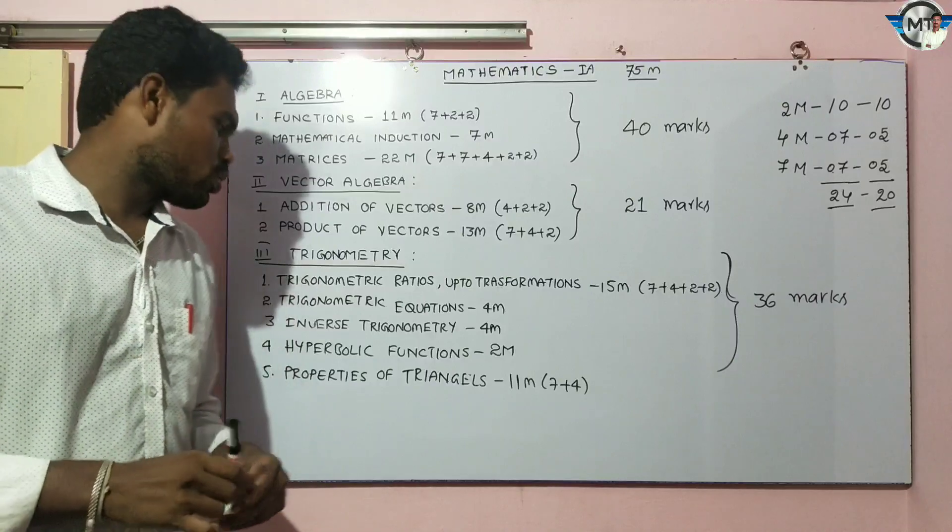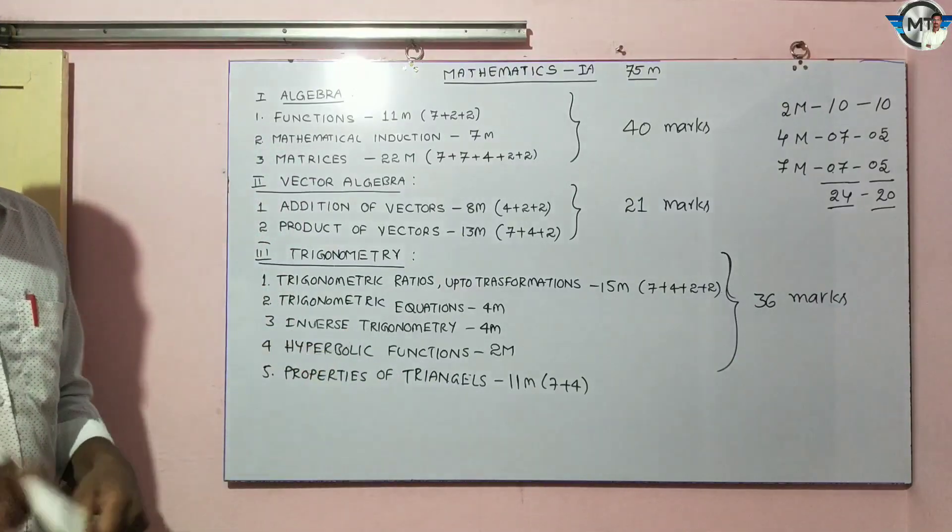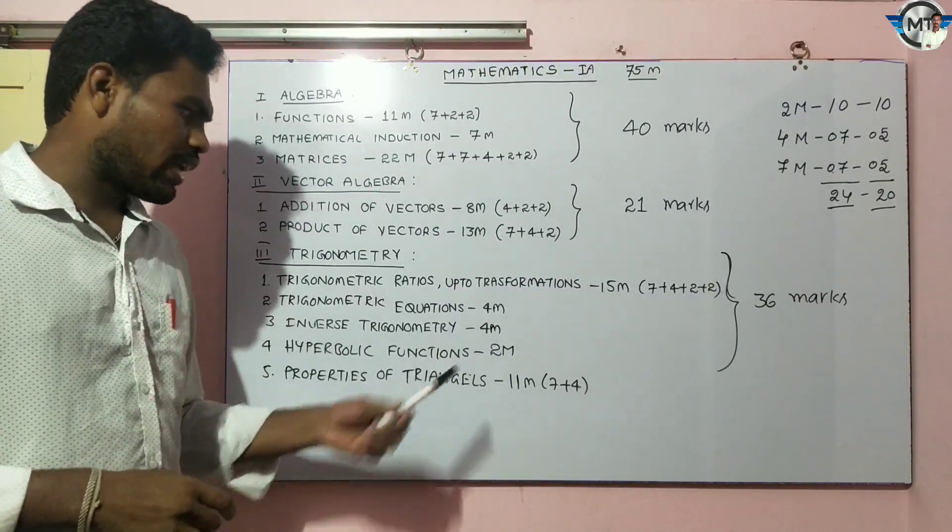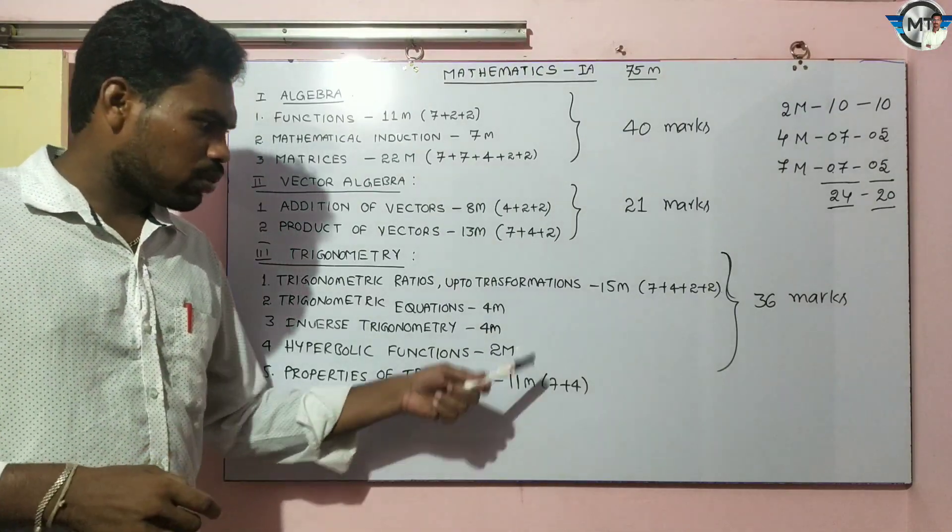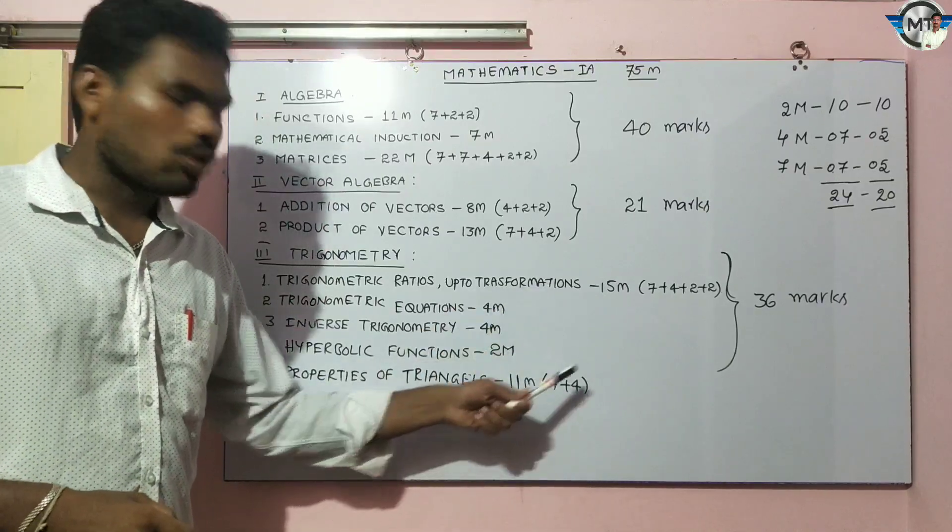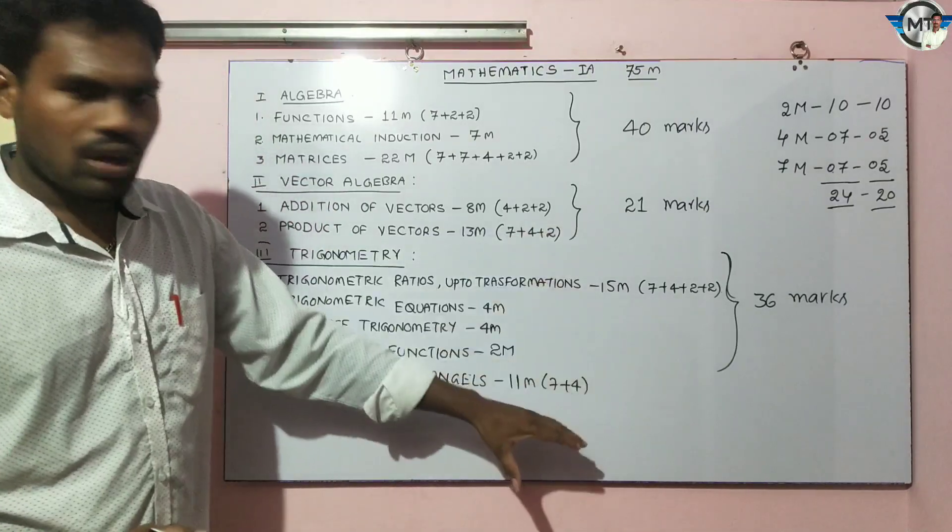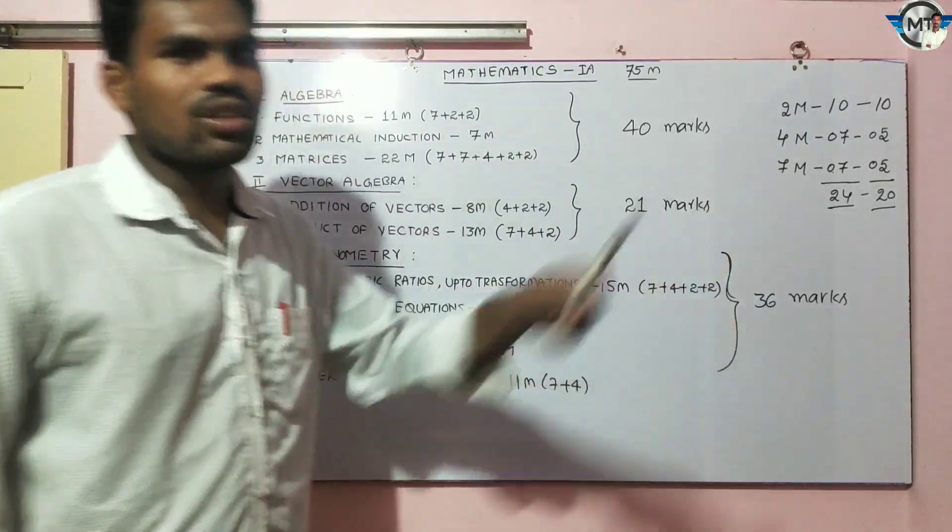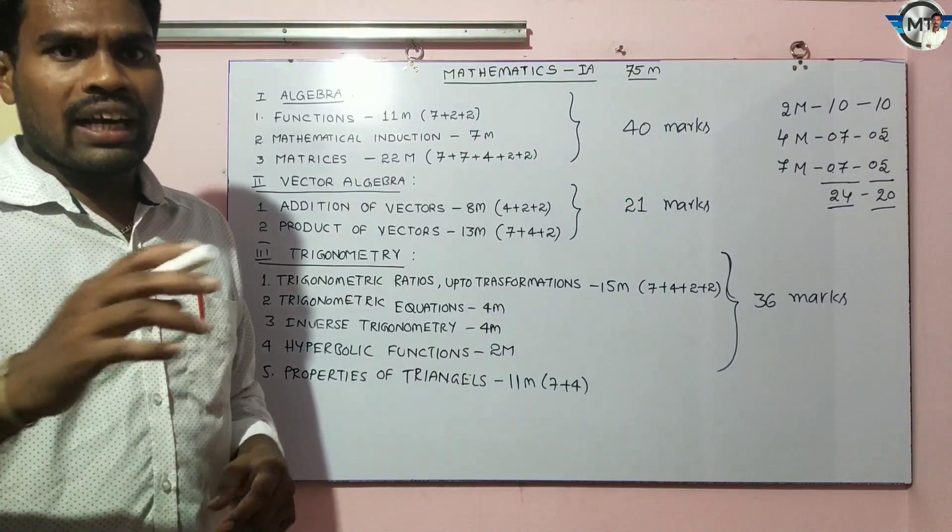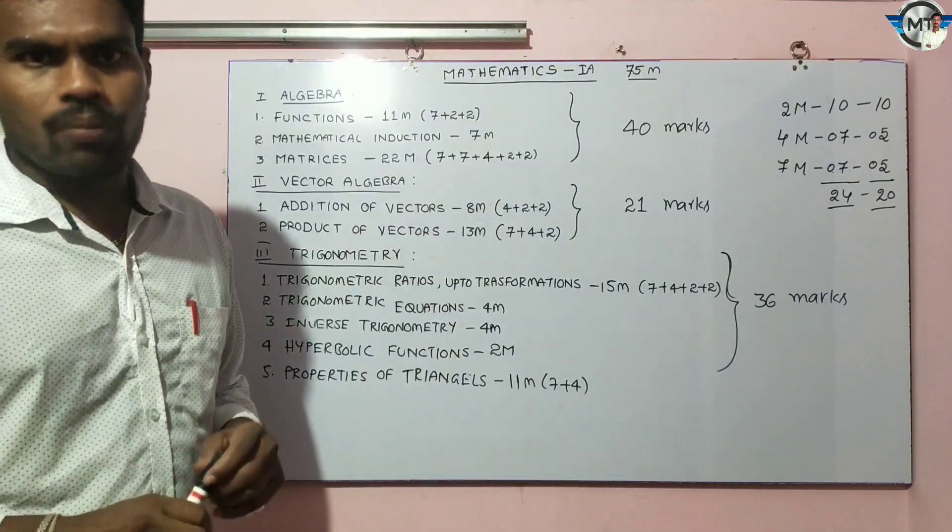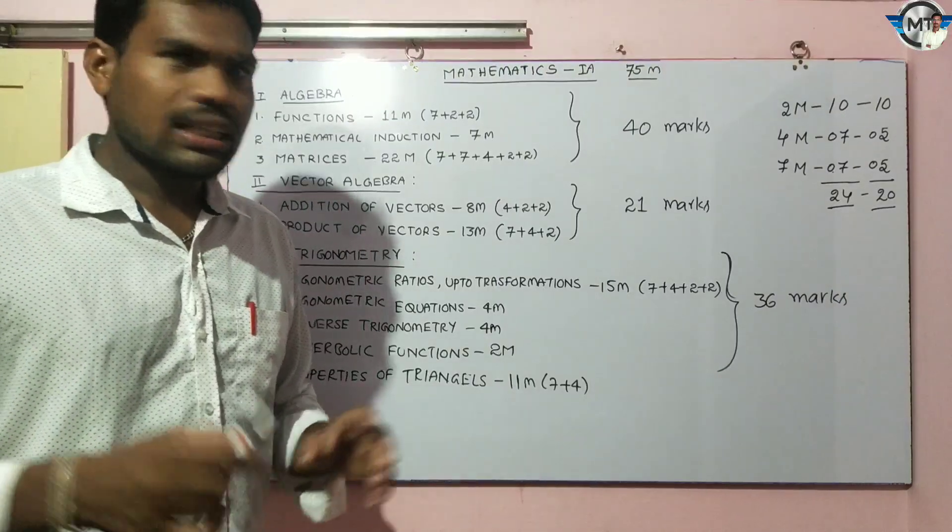Properties of triangles carries 11 marks, with one 4-mark question and one 7-mark long answer. The trigonometry chapter carries 36 marks total, making it the largest portion of the 75-mark paper.